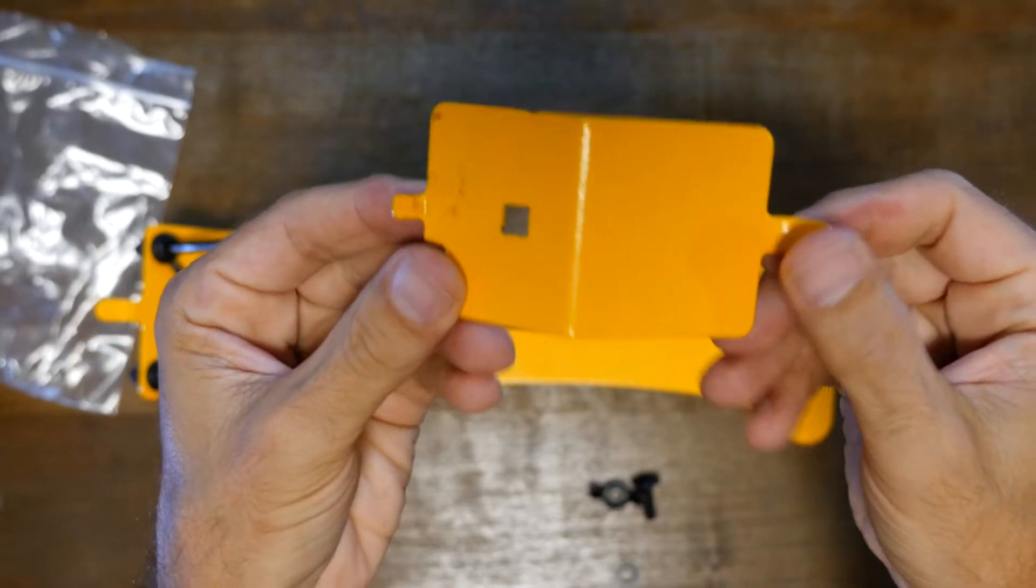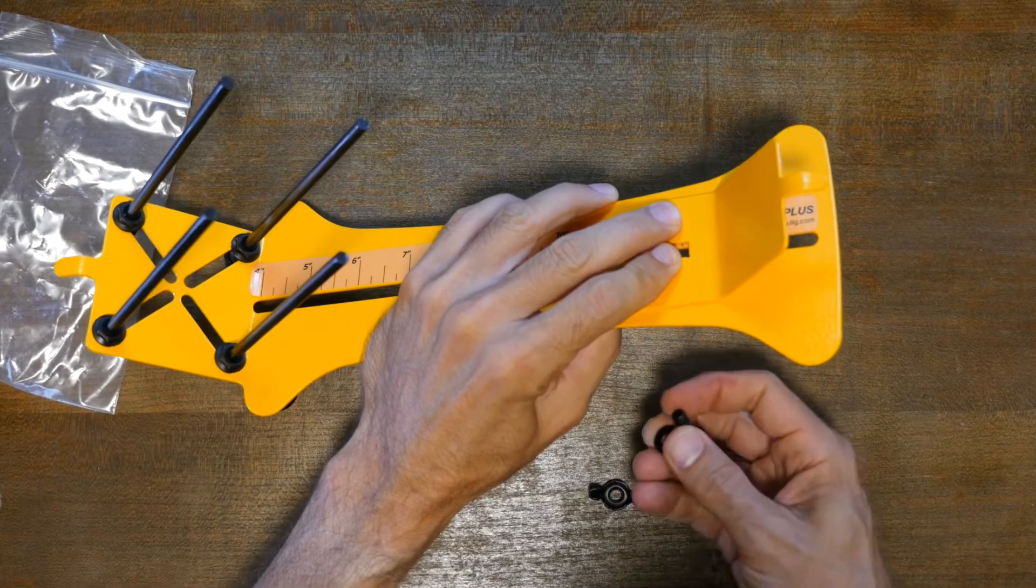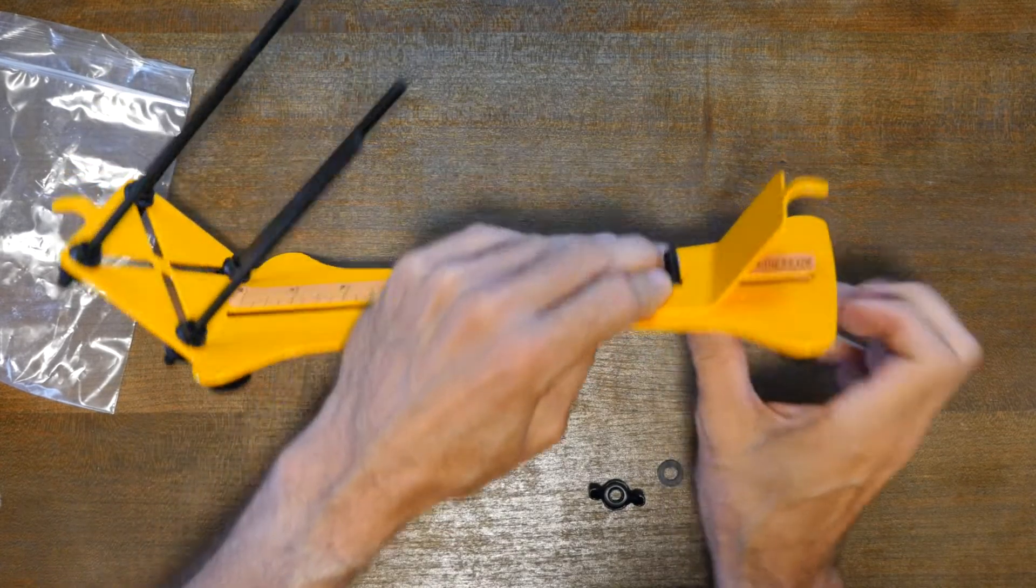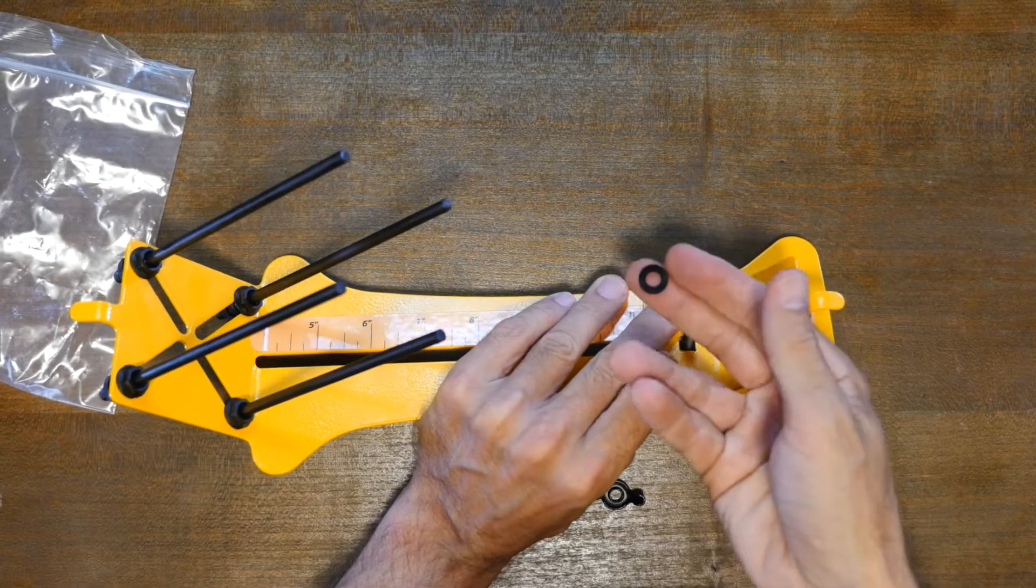The next step is to add the second buckle attachment. This attachment uses a wing nut to easily adjust to any size bracelet without any tools.